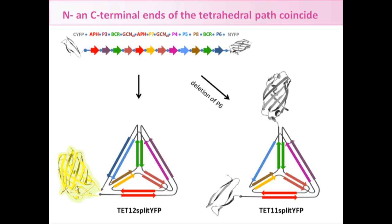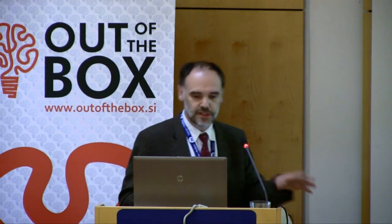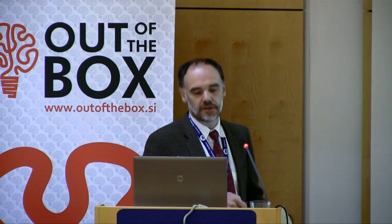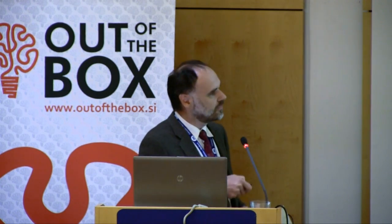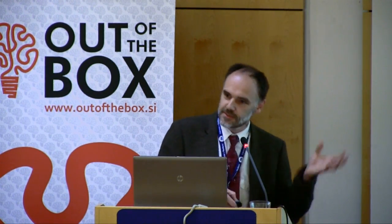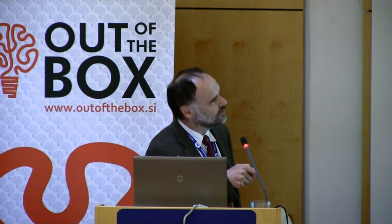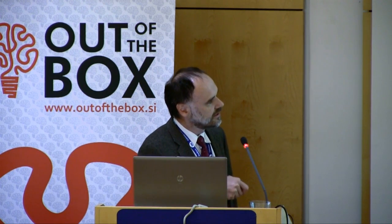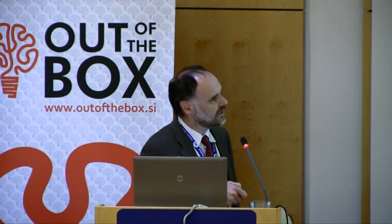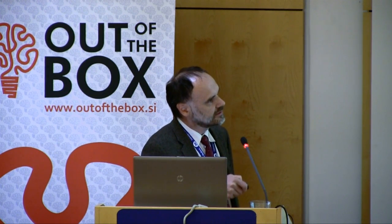The beginning and end of this tetrahedron should come together — this is the so-called Eulerian trail, which must begin and end at the same position. We used this to prove correct assembly: by placing two parts of a fluorescent protein at the termini, they come together and exhibit fluorescence only when the beginning and end meet at the same position. When one segment is deleted, fluorescence is not reconstituted.